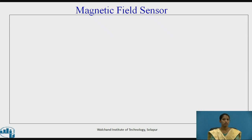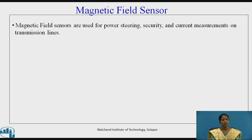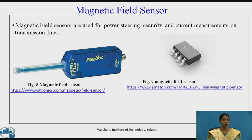Magnetic field sensors are used for power steering, security, and current measurements on transmission lines. Figures 8 and 9 show magnetic field sensors.